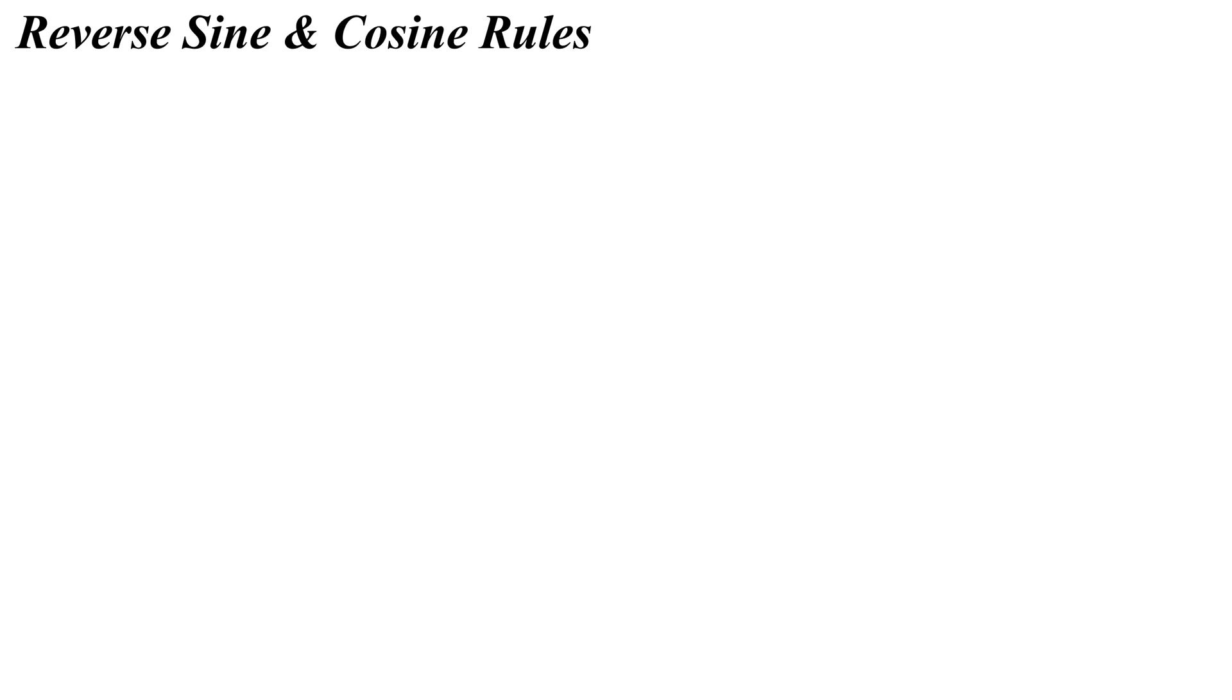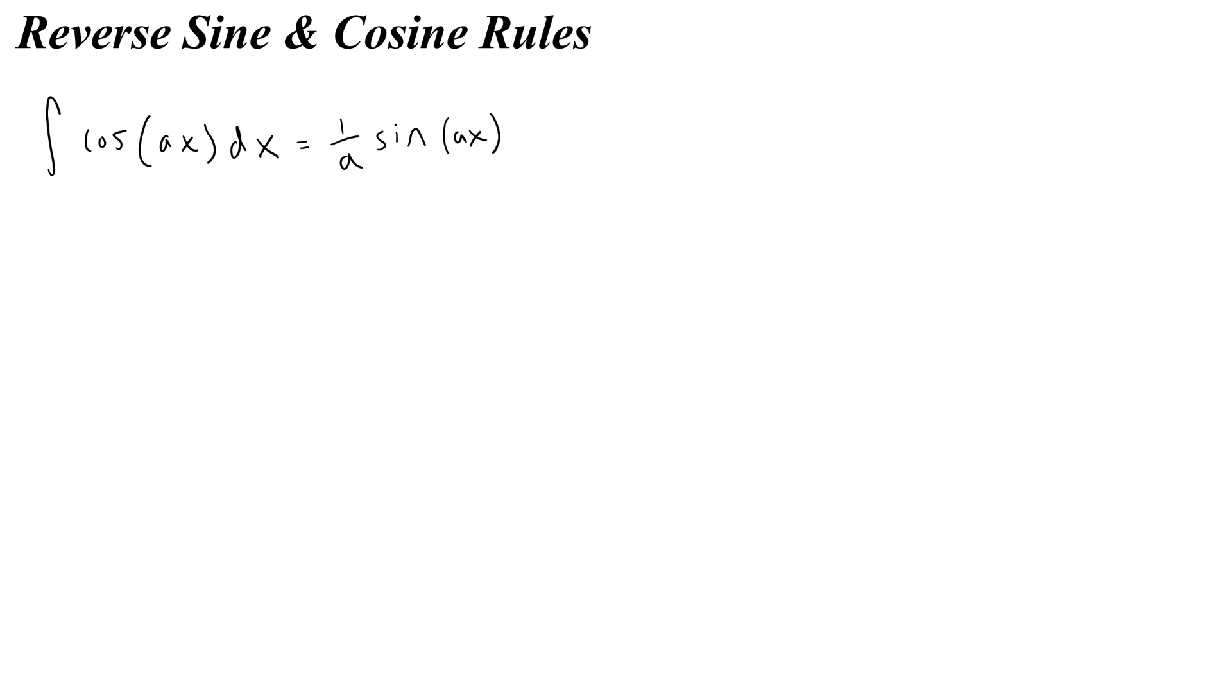So for cosine, they give you the rule: the integral of cosine ax with respect to x, where a is some constant, is equal to 1 over a sine of ax. Which makes sense because if we look back at what we just did, we started here with this function, and 3 is like the a, and we divided the 3 in front by that 3, which gave us a 1 in front of sine.